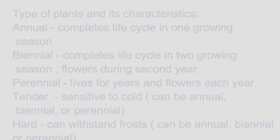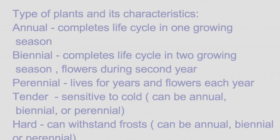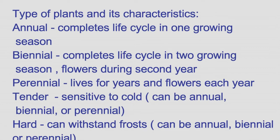Types of plants and their characteristics: an annual completes its life cycle in one growing season; a biennial completes its life cycle in two growing seasons and flowers during the second year; a perennial lives for years and flowers each year.